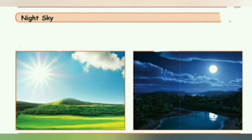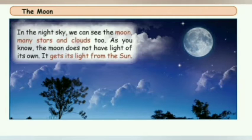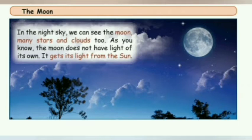The night sky differs from the day sky as there is no sunlight. We can find the moon when the sunlight disappears. The moon is earth's only natural satellite and the fifth largest moon in the solar system. In the night time, looking at the sky, we can see the moon, stars, and clouds. It looks dark because there is no sunlight.